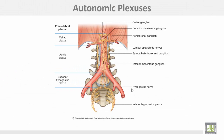This is the autonomic plexus: the celiac plexus at the celiac artery, the aortic plexus, and the superior hypogastric plexus. This is the hypogastric nerve, and this is the inferior hypogastric plexus.